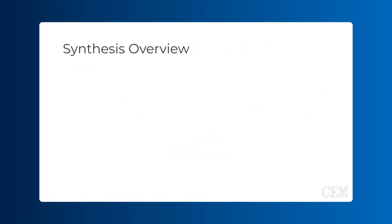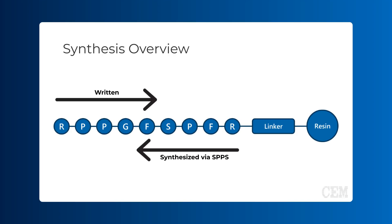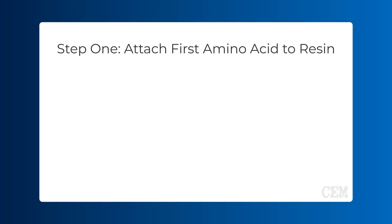Let's return to our example peptide, bradykinin. We've established that the correct way to write its sequence is from N-terminus to C-terminus, but in SPPS, peptides are actually synthesized starting from their C-terminal amino acid. The protocol for attaching the first amino acid to the resin depends on the specific linker being employed, but it is always through its carboxyl group. For our synthesis of bradykinin, let's assume we are using Fmoc-Arg(PBF) Wang resin and that the first amino acid, arginine, is already attached.